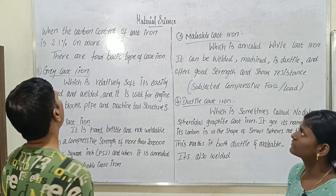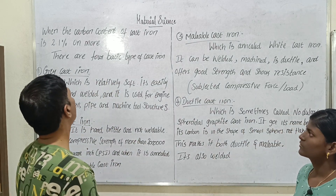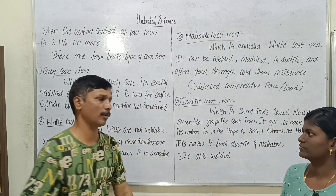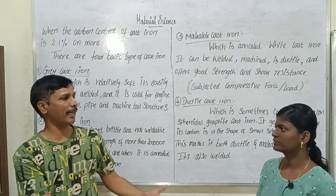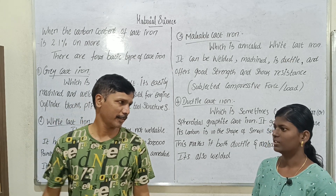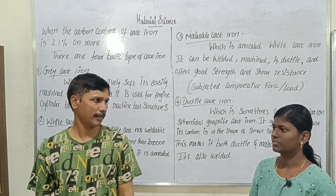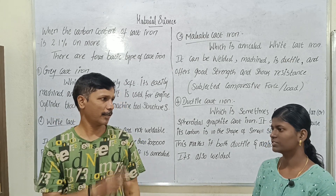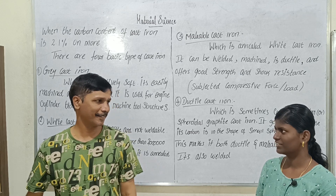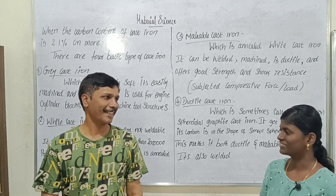So, what do we talk about in material science? Let's talk about cast iron in material science. First, what do we call steel? Steel is iron.